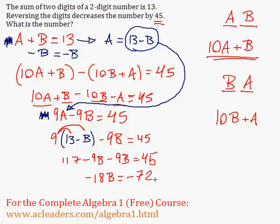And negative 72 divided by negative 18, because I can divide both sides by negative 18, is just equivalent to 4.